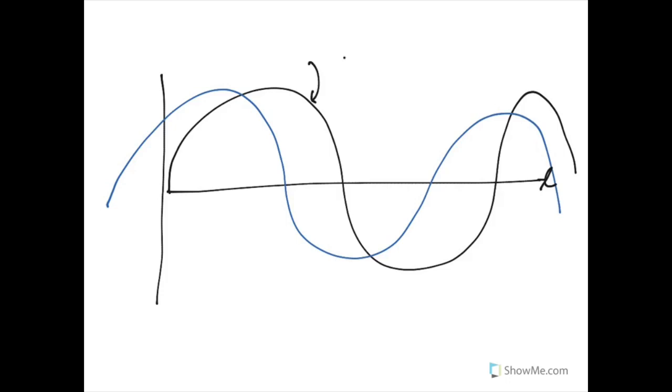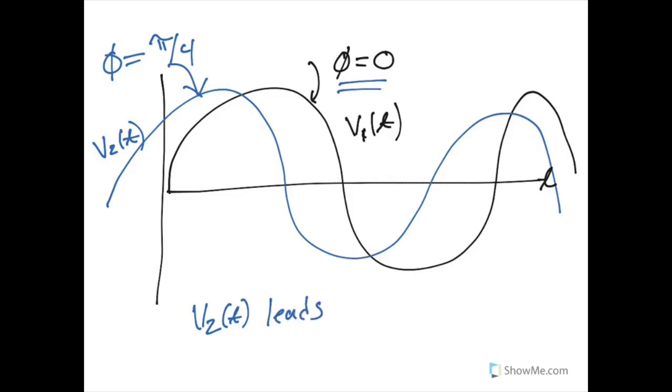So we can say that the phase delay on the black wave here is zero, but because this blue wave is in front, its peak actually occurs before the black wave, we will give it a positive phase delay relative to this reference point of zero. So if the black wave is V1, and the blue wave is V2,